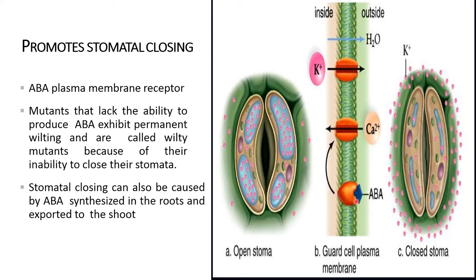Stomatal closing: whenever abscisic acid binds to the guard cells present on the plasma membrane, it leads to the entry of calcium ions and exit of potassium ions. Mutants that lack the ability to produce ABA exhibit permanent wilting and are called wilt mutants because of their inability to close their stomata. Stomatal closing can also be caused by abscisic acid synthesized in the root and exported to the shoot.